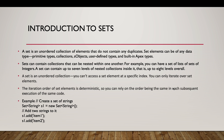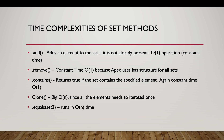The iteration order of Set elements is deterministic, so we can rely on the order being the same in each subsequent execution of the same code. This is how we create a Set in Apex — we use the less-than and greater-than signs, provide our data type (for example, String), then use the new keyword. This is also how we add elements to the Set using the different methods associated with Sets.